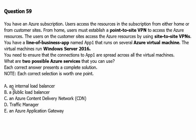We are given five options and have to choose two suitable services which can serve the purpose. Option A is an internal load balancer. As we know, an internal load balancer can distribute traffic among virtual machines.